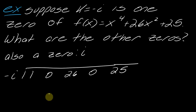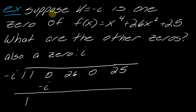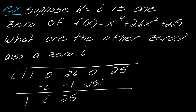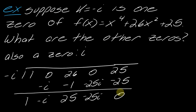The coefficients are 1, 0, 26, 0, 25. Bringing down 1, then 1 times negative i is negative i; 0 plus negative i is negative i; negative i times negative i is positive i² which is negative 1; 26 minus 1 is 25; 25 times negative i is negative 25i; adding gives negative 25i; negative 25i times negative i is positive 25i² which is negative 25; adding gives 0, confirming negative i is indeed a zero.